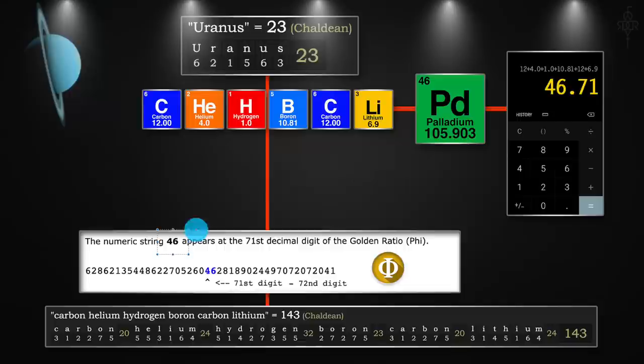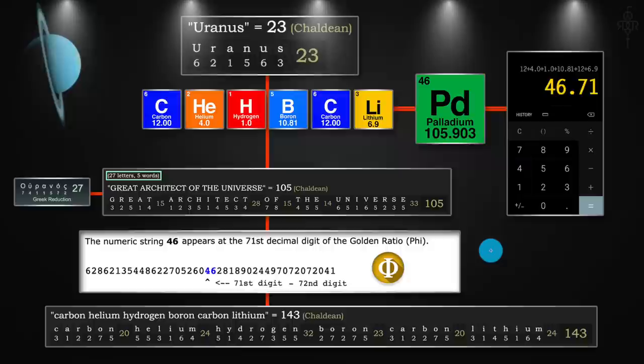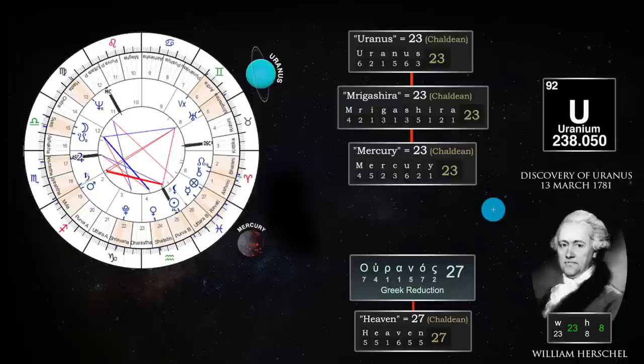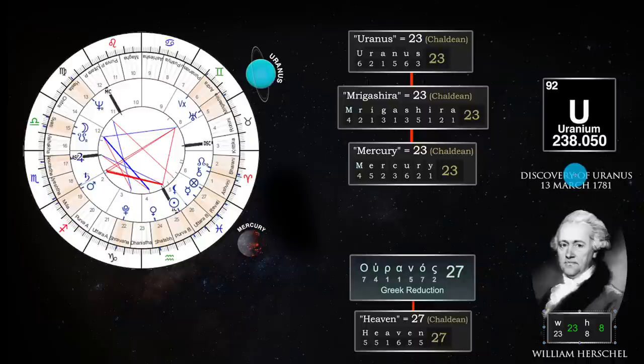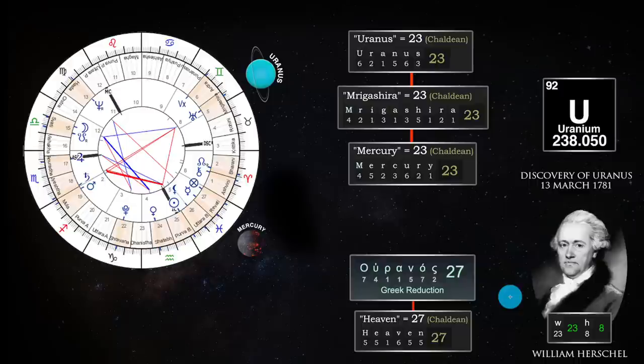Lutetium is element 71 — tied to Lucifer and Prometheus — and tied to the great architect of the universe at 105. This is so dialed in — this is the source code, the storyboard behind everything we're living out. Our double helix, and of course lutetium-71 tied right to it. To finish this decode, I wanted to bring in the discovery of Uranus. It was discovered by William Herschel — notice his initials are W and H — and W-H in numerology is 23-8, which coincidentally matches the atomic mass of uranium: 238.